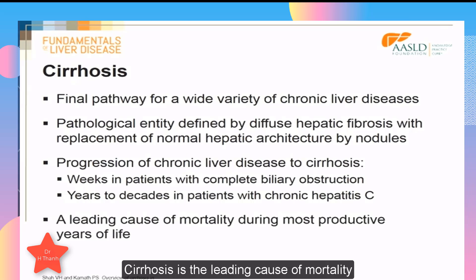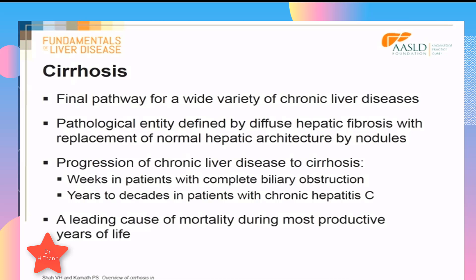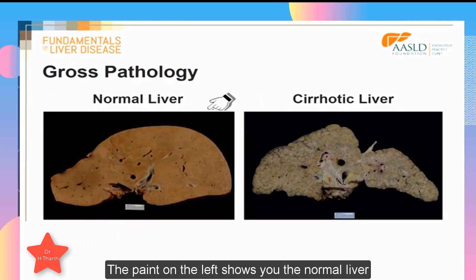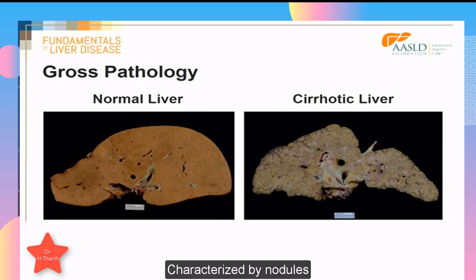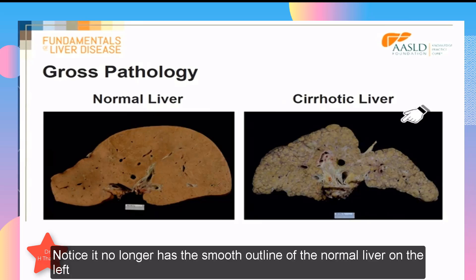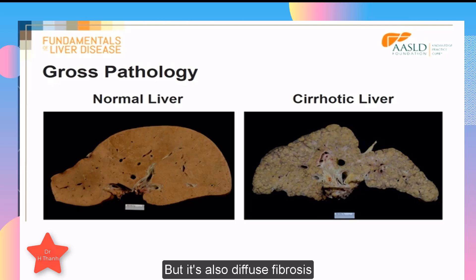Cirrhosis is a leading cause of mortality during the most productive years of life. The panel on the left shows the normal liver. The panel on the right is a cirrhotic liver characterized by nodules. Notice it no longer has the smooth outline of the normal liver on the left. There is also diffuse fibrosis.